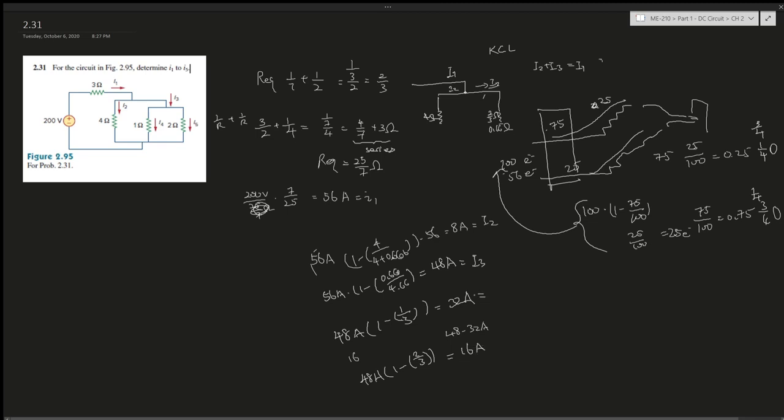So 32 amperes is going to the 1 ohm resistor, which is I4, and 16 amperes is going to the 2 ohm resistor, which is I5. This is how you solve the problem. I2, I3, I4, I5, and I1 - we found it, which is 56 amperes.